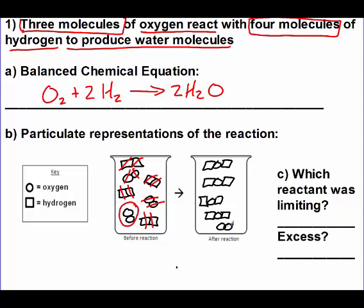So the limiting reactant is the one that we ran out of. And as we can see from our drawing, our hydrogen is what ran out. Excess is what we still have in the beaker. And if we had more hydrogen, we could make more water, which is oxygen. So oxygen is our excess reagent in this case.